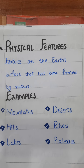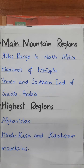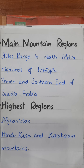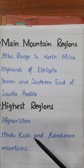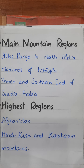These physical features are natural — not man-made. When we talk about mountains, the main mountain regions of the Muslim world are: the Atlas Range in North Africa, the highlands of Ethiopia, Yemen, and the southern end of Saudi Arabia, eastern Turkey, much of Iran, and the highest regions of all — Afghanistan, the Hindukush, and the Karakorum mountains of Pakistan. However, very few people live in these mountainous regions because of the harsh climatic conditions.